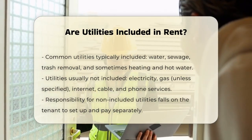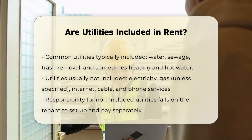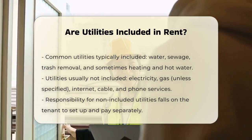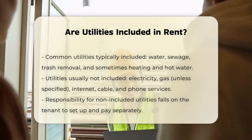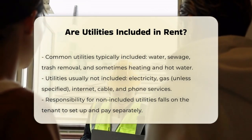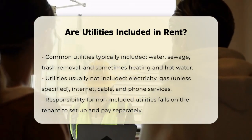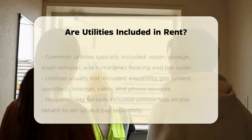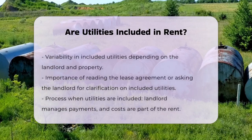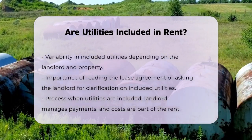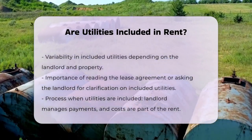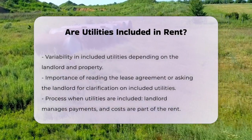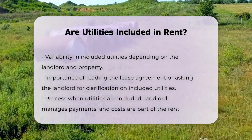Variations in included utilities. The specific utilities included can vary greatly depending on the landlord and the property. Some apartments may include electricity, gas, or even internet, while others may only cover the basics like water and sewage. It's crucial to read the lease agreement carefully or ask the landlord directly to understand what is included.